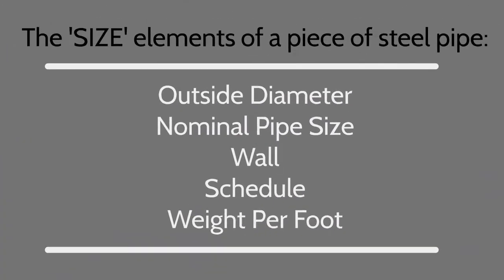The elements we use to describe the size of a piece of steel pipe include outside diameter, nominal pipe size, wall, schedule, and weight per foot. Let's look into each of these further.